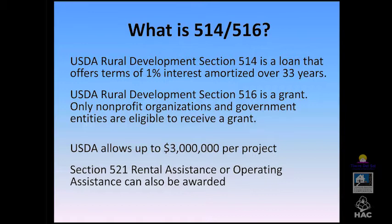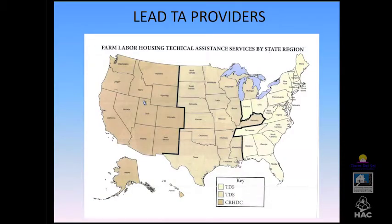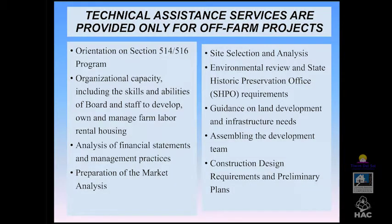Funding can be used to pay legal, architectural, and engineering fees, construction loan interest, and provide temporary relocation if existing tenants need to be temporarily relocated while a project is renovated. The map shows the areas where CRHDC and Tierra del Sol provide their services. CRHDC oversees the western region and Tierra del Sol oversees the central and eastern region. However, one call to either organization will put you in touch with the TA provider for the region where you plan to develop housing.